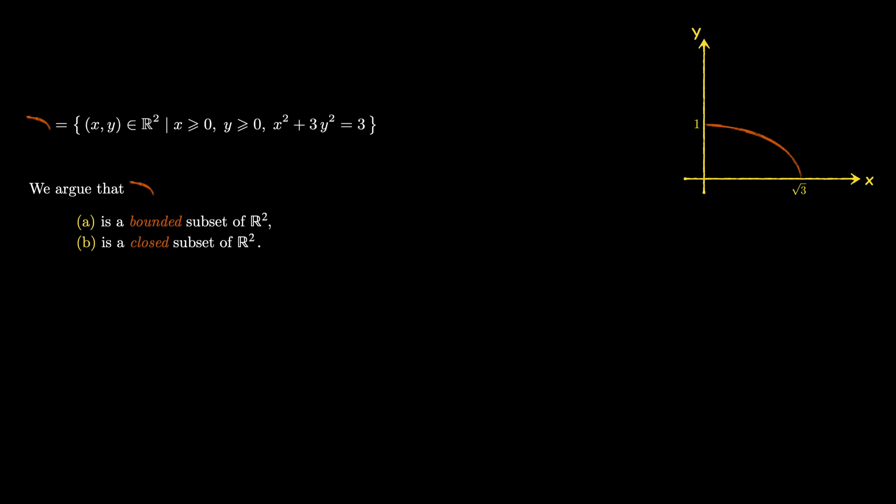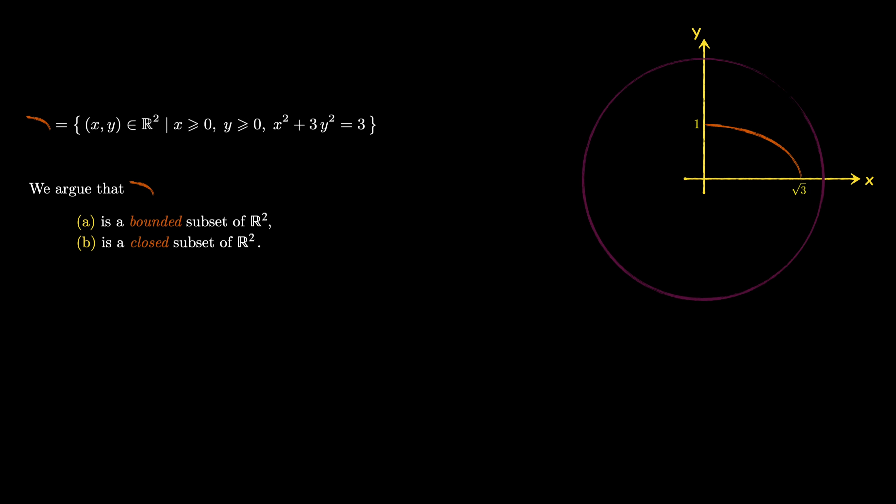This is clear. It's enough to choose the radius of the circle to be any number greater than √3. This circle has a radius greater than √3, and as you see, it is centered at the origin and contains the whole orange curve. So this is enough to show that this subset is a bounded subset of ℝ².